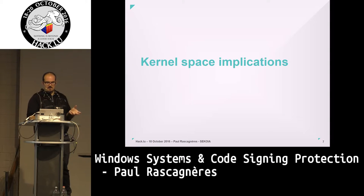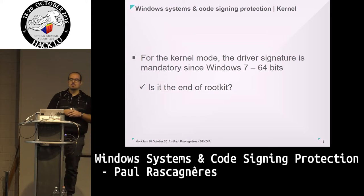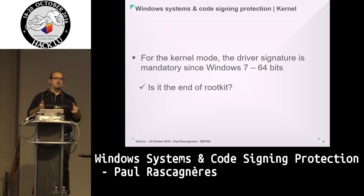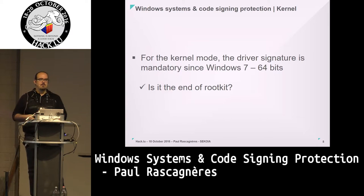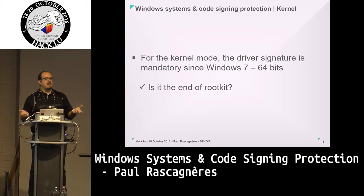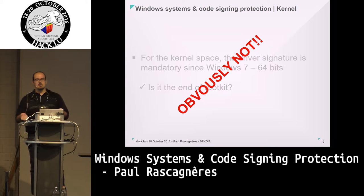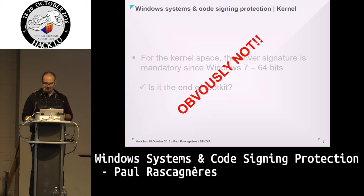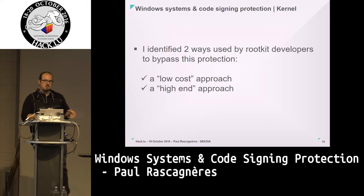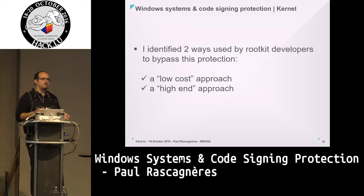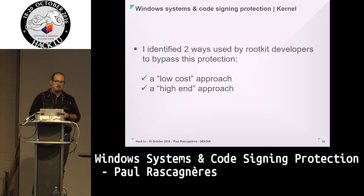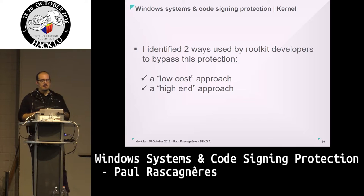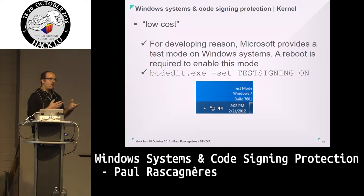In kernel space, since Windows 7 you are not allowed to load a driver if it's not signed by a legitimate provider — self-signing doesn't count. Does that mean it's the end of rootkit malware operating in kernel space? Obviously not. We have current rootkits, and the interesting thing is to understand how they deal with this protection. I identified over the past few years two main ways to bypass it: a low-cost approach that's not really efficient but works, and a more technical approach that I find more interesting.